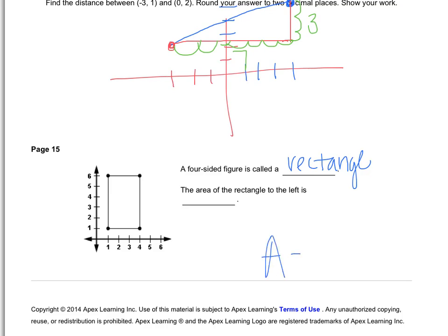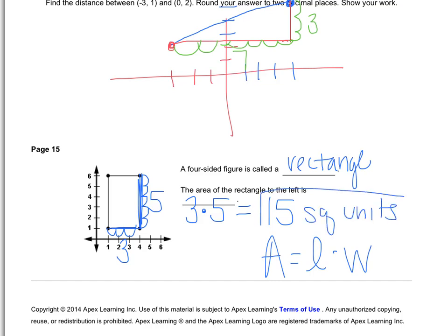To find the area of a rectangle, you need to multiply your length times your width, which will come in handy for our next question, which says, the area of the rectangle to the left is blank. Well, in order to find that out, we need to figure out how long it is and how wide it is. So our length would be one, two, three units long, or wide, whichever direction you want to call that. And the other one would be one, two, three, four, five. So to find the area, we're going to do three times five, which equals 15 square units. Area is always measured in square units.